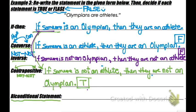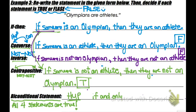We only write the biconditional statement when all four statements are true. In this case we cannot write one, but a biconditional is written as: hypothesis 'if and only if' conclusion. If it were true, we'd say: someone is an Olympian if and only if they are an athlete.